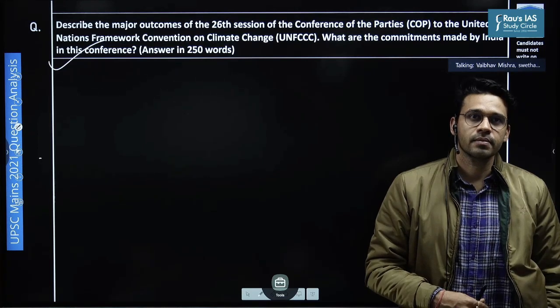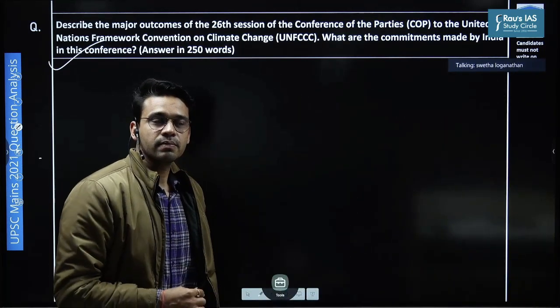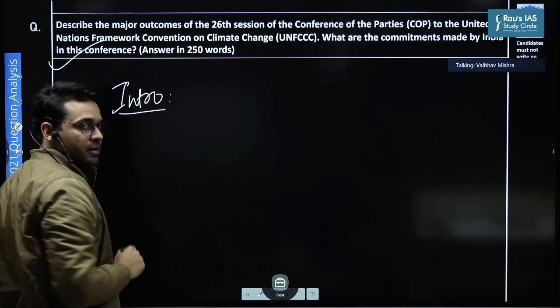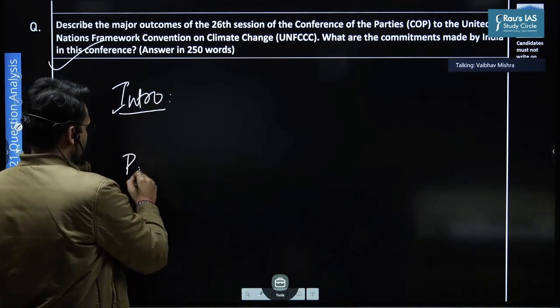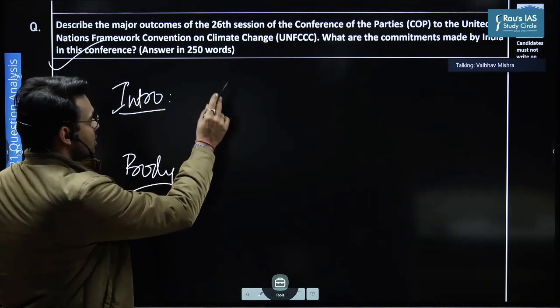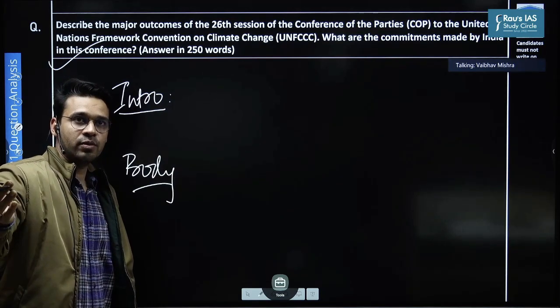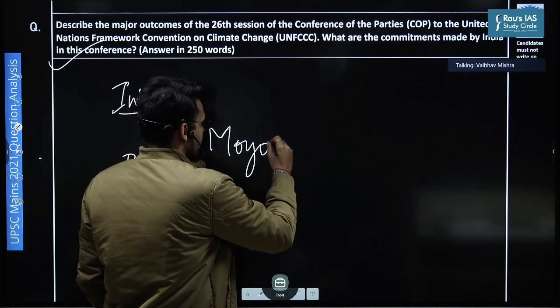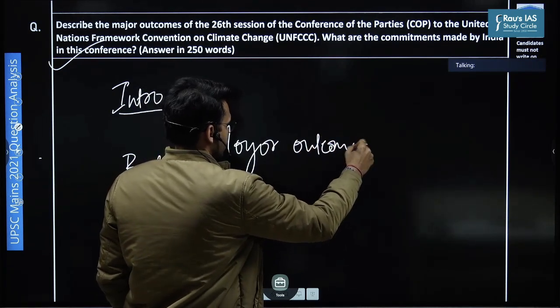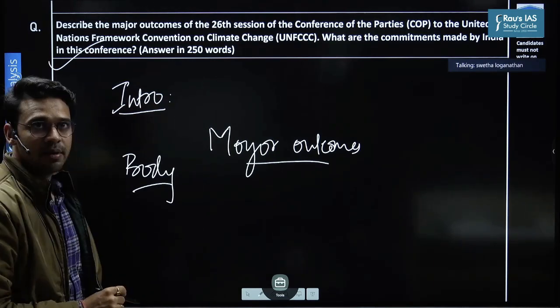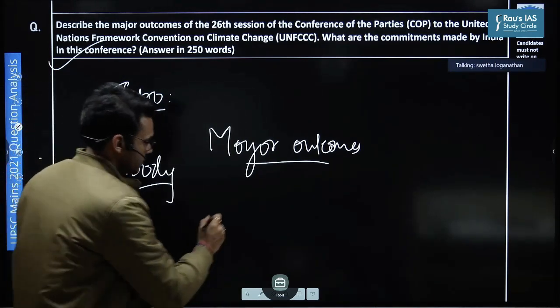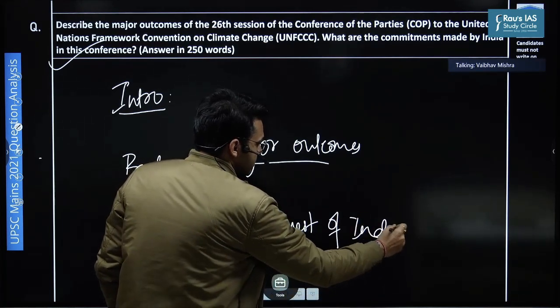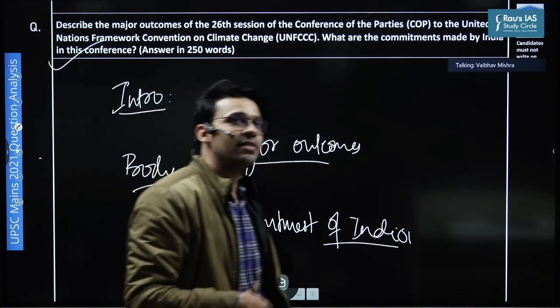So basically this question would require us to say what kind of conclusions they came with. Perfect. So let's leave the intro for some time. If we talk about the body part, as soon as your introduction ends, how would you start the body part? What would be the heading of your body part? So major outcomes you will write about, and then commitments made by India. So you can see that the question in this part this year, particularly having very straightforward, it's not very difficult to decode them.